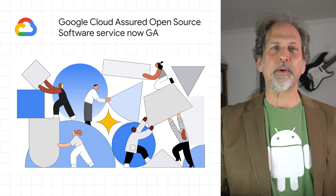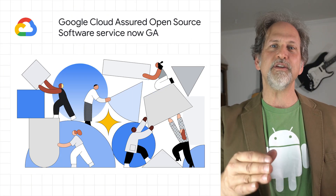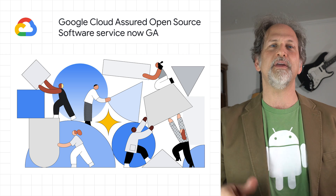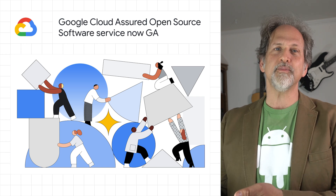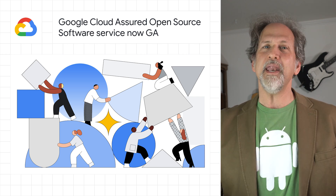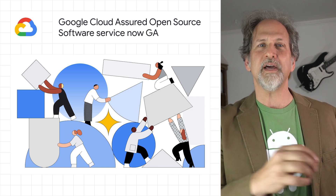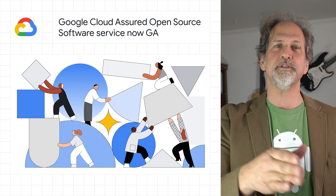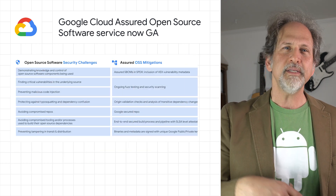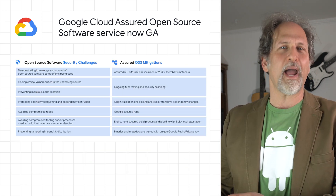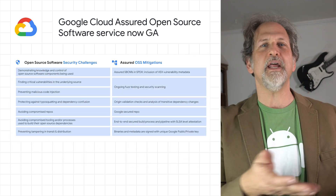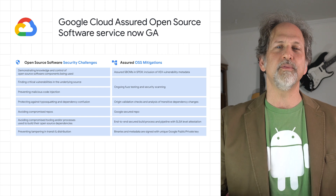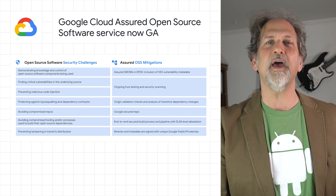We announced the general availability of the Assured Open Source Software service for the Java and Python ecosystems, allowing any organization to leverage the security and experience Google applies to open source dependencies to help with obtaining packages, understanding their ingredients, reducing risk from vulnerabilities, and more.